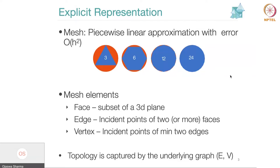The point is that the dimensionality of an object can be lower than the dimensionality of the space it is embedded in. In 3D space I can always embed any object of dimension three or less: solids, surfaces, curves, and points. The boundary of a shape is always one dimension less than the dimensionality of the shape itself.